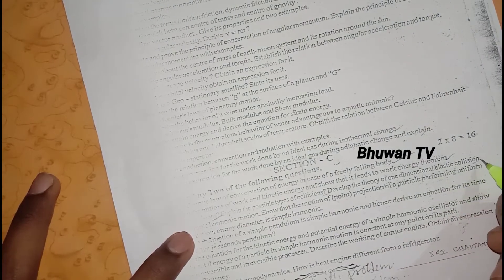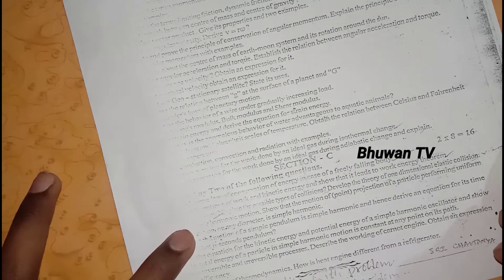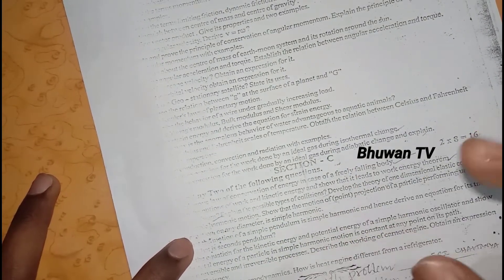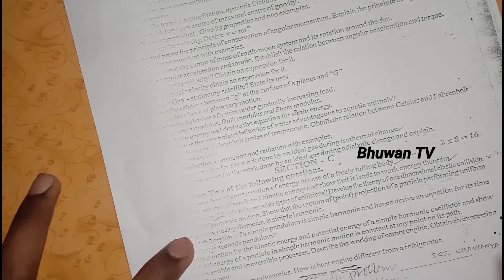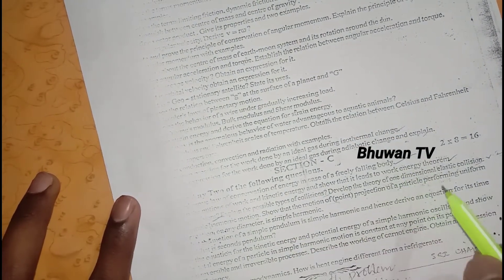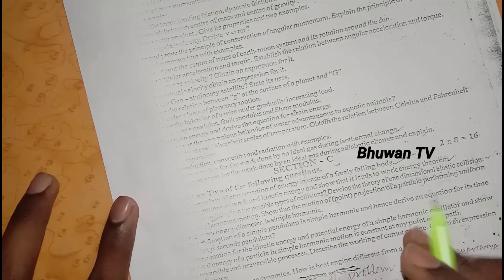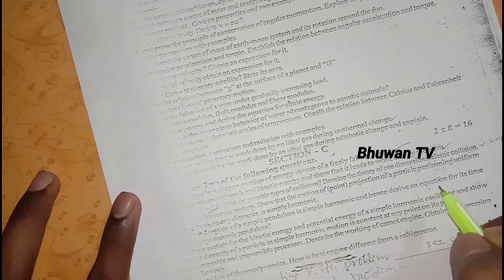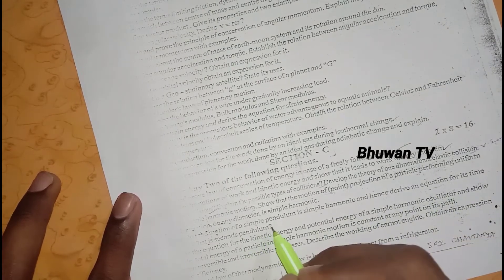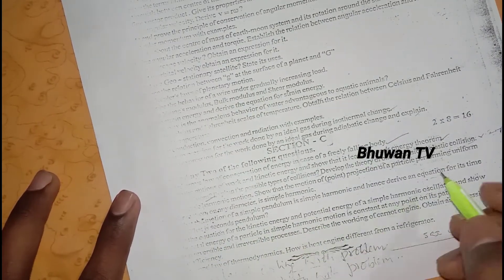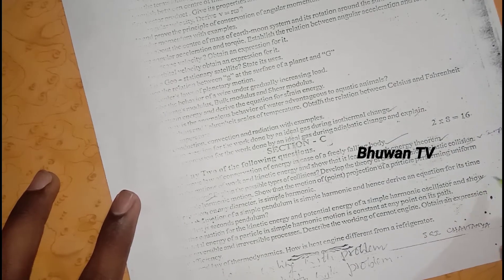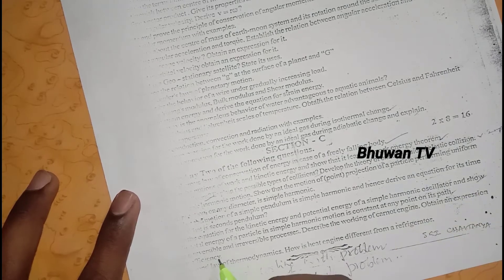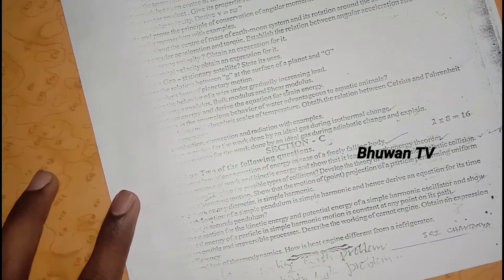Of one-dimensional elastic collision, very important. Next, simple harmonic motion, show that the motion is very important. Simple pendulum is for simple harmonic motion, and derive the equation for its time. What is seconds pendulum? Next, equation of kinetic energy, potential energy in simple harmonic oscillator. And next, total energy of a particle in simple harmonic motion is constant at any point on its path.